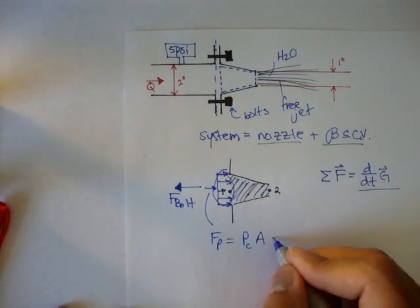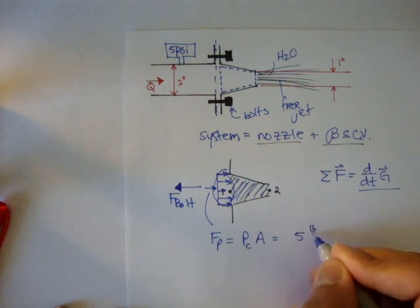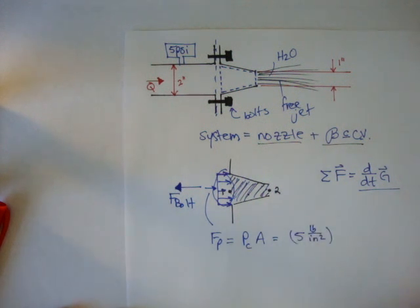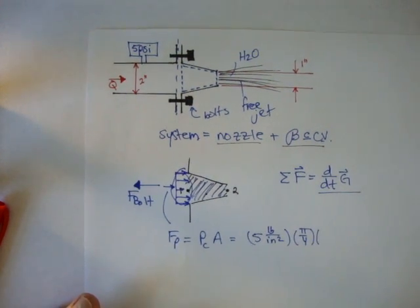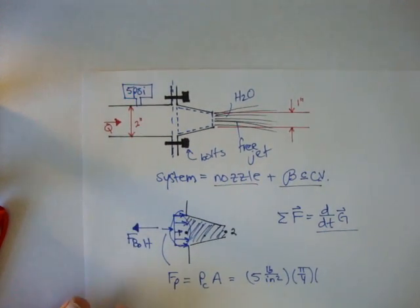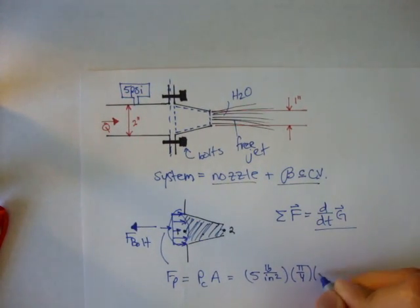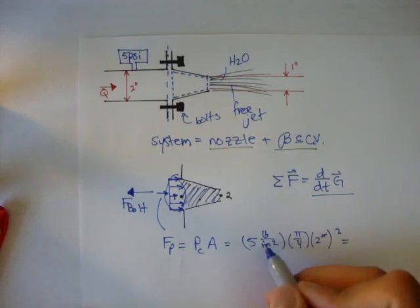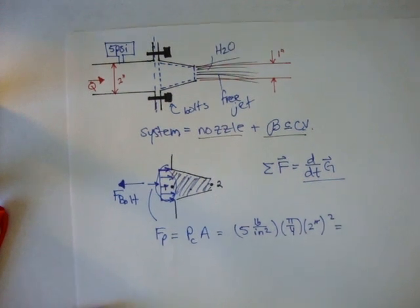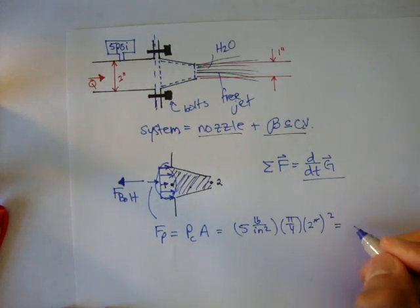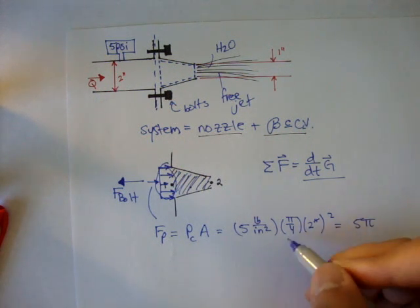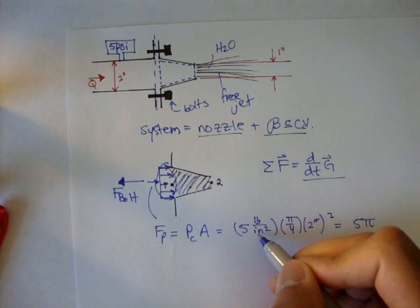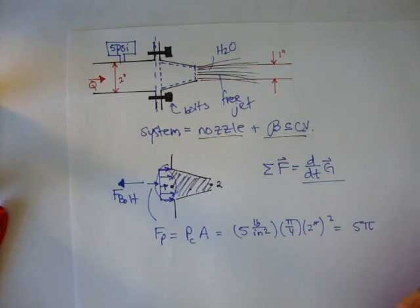And the pressure we know is five pounds per inch squared times the area. Well, the area is going to be π/4 times the diameter squared. And in this case, our diameter is two inches squared. And if we work this out, you notice that the inches squared is going to cancel out. And we get five times π. Because this is two times two, or two squared is four, over four is one. Then you have inch squared over inch squared, and you get just pounds.